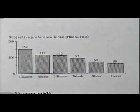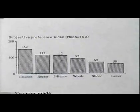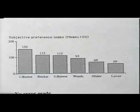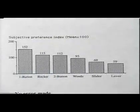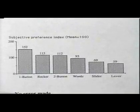We ran a usability study with 15 subjects. They were given representative tasks, and error rates and user satisfaction data were collected. The results showed that no errors were made while reading the state of the toggle. A fairly consistent ordering was found. For example, the subjective preference index showed the ordering: one button, rocker, two button, words, slider, and lever.